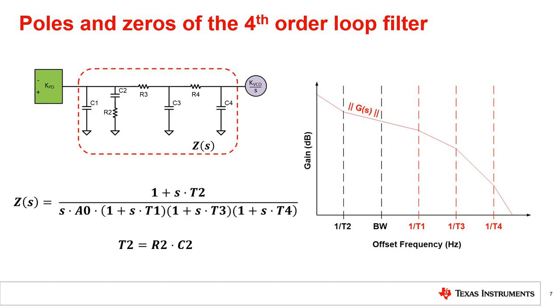In reality, if the roll-off is 40 dB per decade after the first pole, 1 over T1, the roll-off would not be exactly 60 dB after the second pole, 1 over T3, because the Bode plot will not have a corner at 1 over T3, but rather a more natural curve.